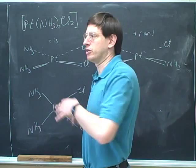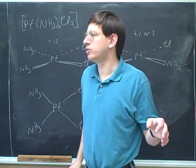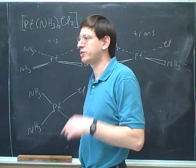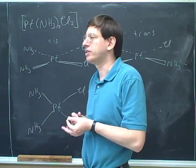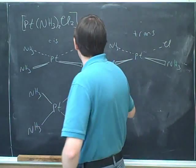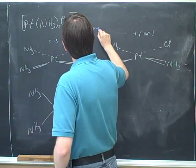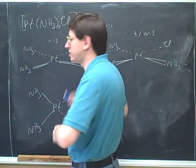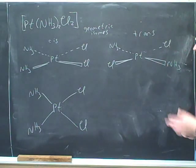Now, there are different types of isomers. There's linkage isomers, coordination isomers, geometric isomers, optical isomers. Cis and trans are called geometric isomers. So if there's a cis-trans relationship between two pictures, they are geometric isomers. So these are geometric isomers of each other.